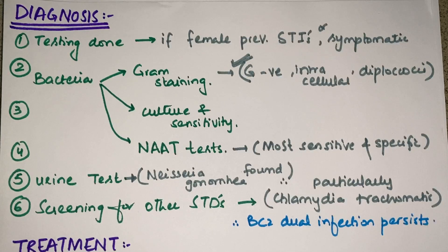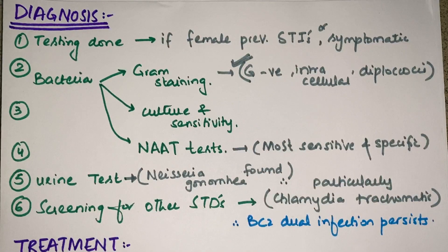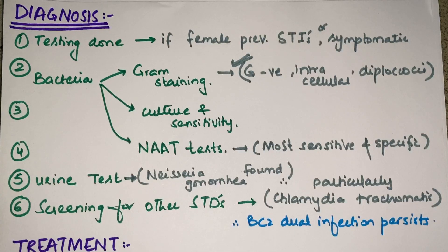The third diagnostic test is the nucleic acid amplification test (NAAT), which is the most sensitive and specific test for the diagnosis of gonorrhea. Since gonorrhea can also infect the urethra, urine tests are performed to isolate the bacteria. Lastly, we screen for other sexually transmitted diseases — especially Chlamydia trachomatis — because there is evidence that patients can have dual infection, so diagnosing it allows for adequate treatment.